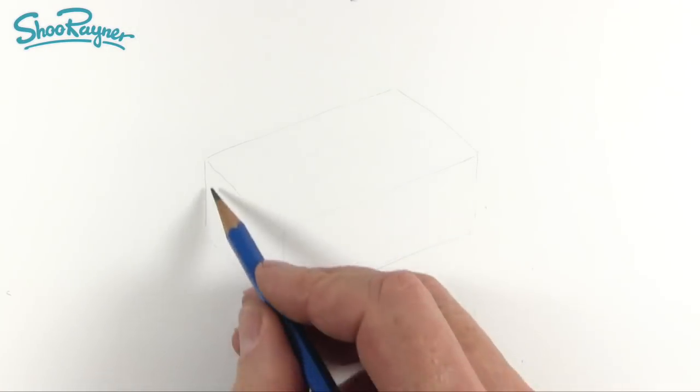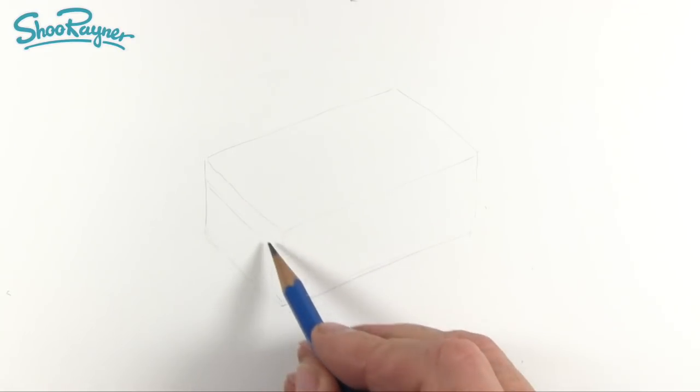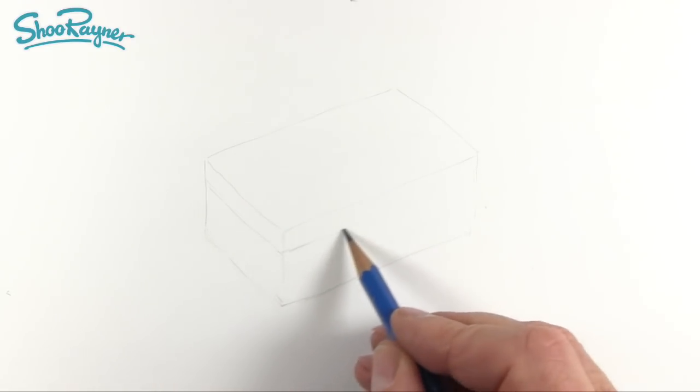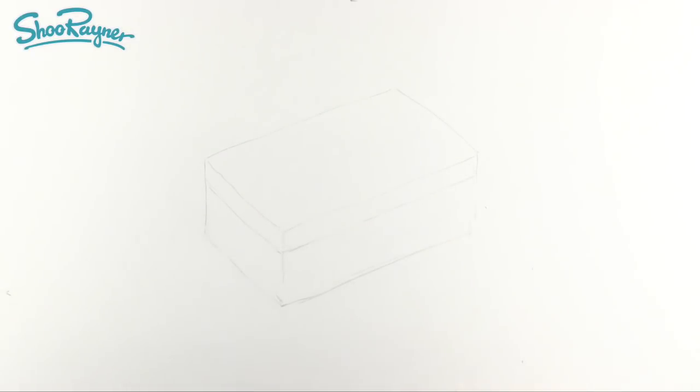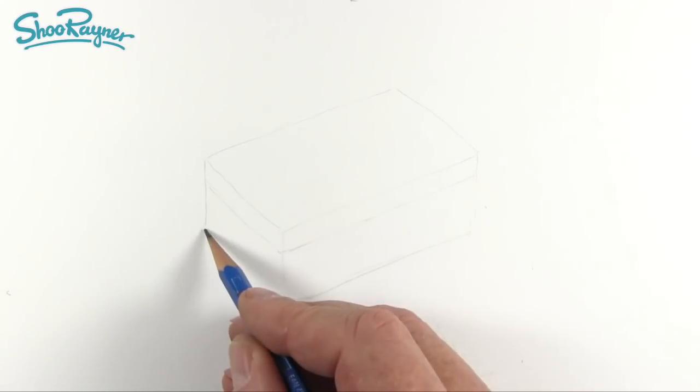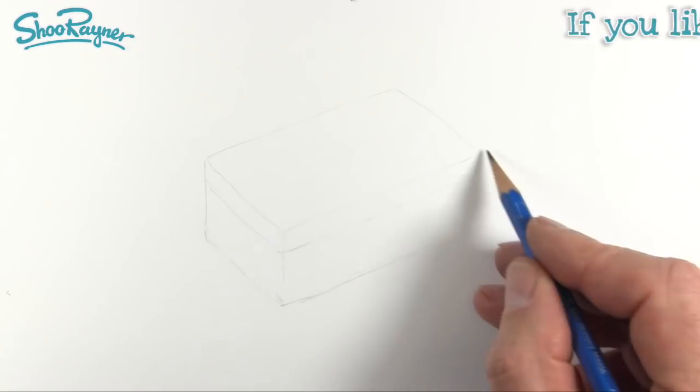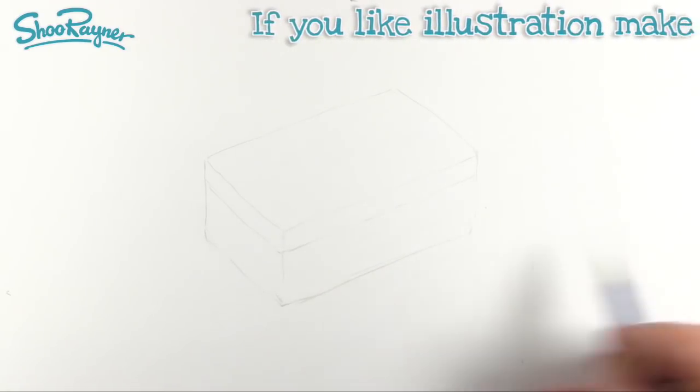So we're going to want to have a lid at the top of the box. So imagine it's kind of sliced off like that. And we're going to want to kind of soften the edges as well. So they're not going to be corners. They're going to be just rounded a little bit.